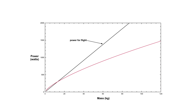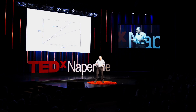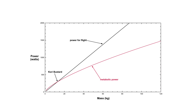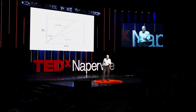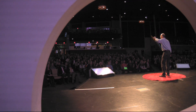Now I'm going to show one more slide like this, but extended into the mass range that covers the Quetzalcoatlus. Power in watts, mass in kilograms, going up to 120 kilograms. There's the power for flight line, the metabolic power line, and the crossover point at the kori bustard at 13 kilograms. You take pterodons all the way up to Quetzalcoatlus and they go here. So these large flying creatures not only lack the power to fly by a little bit — they lack the power to fly by a whole lot.